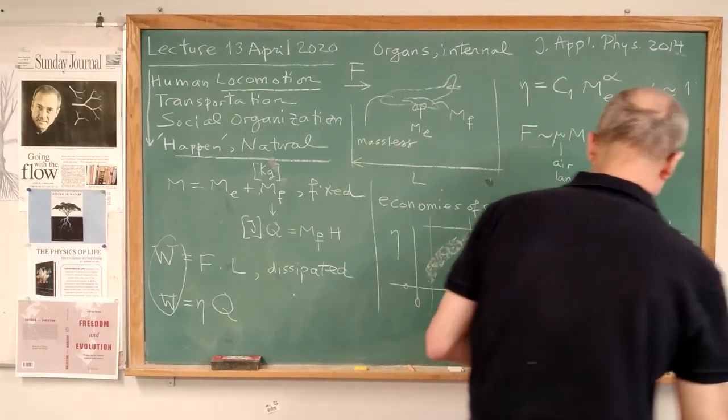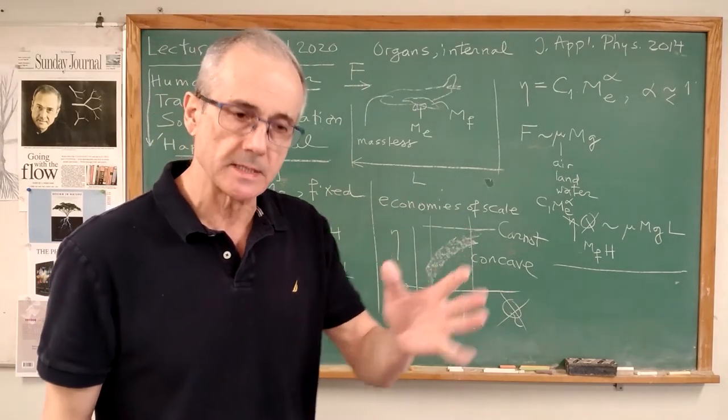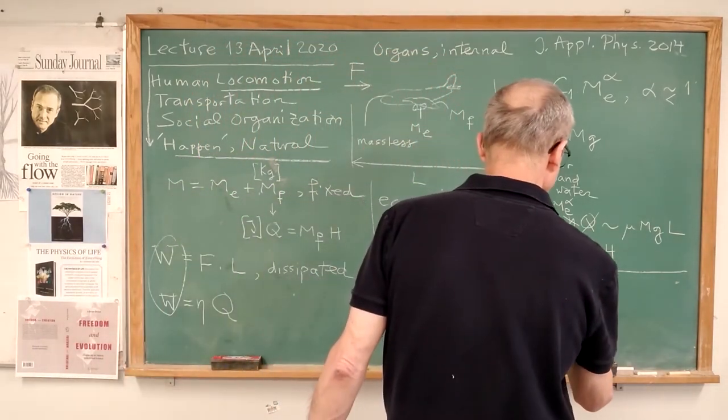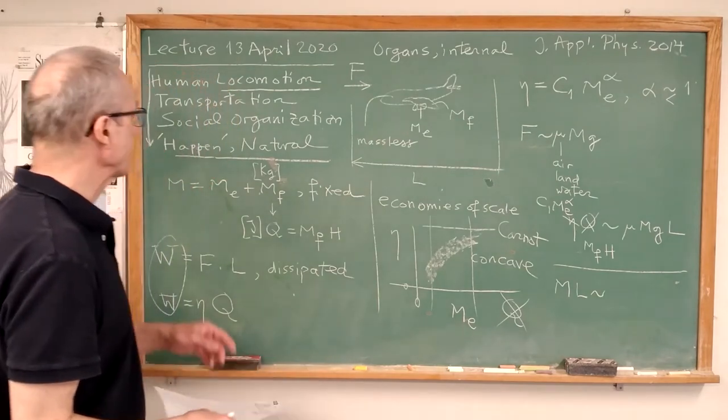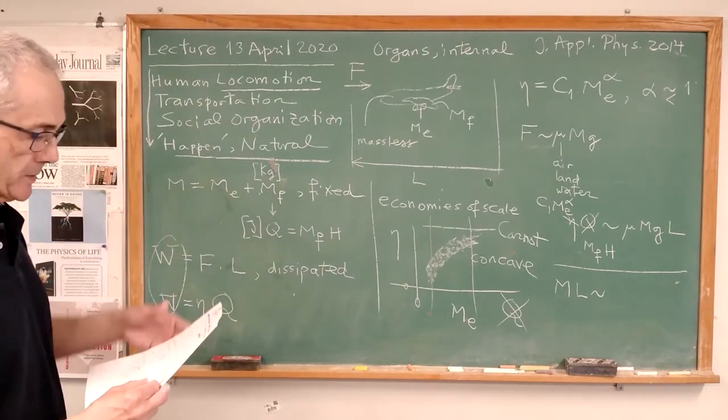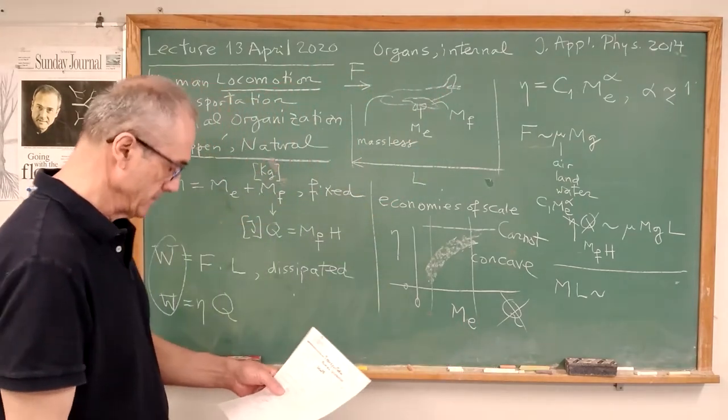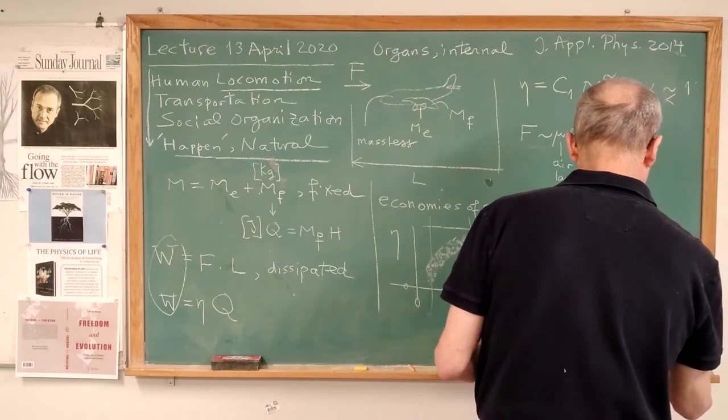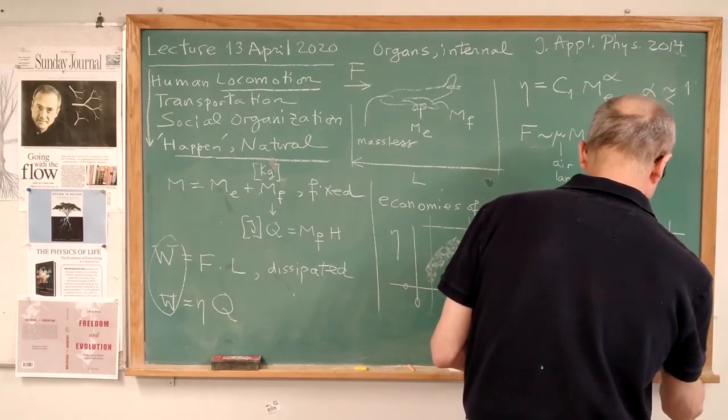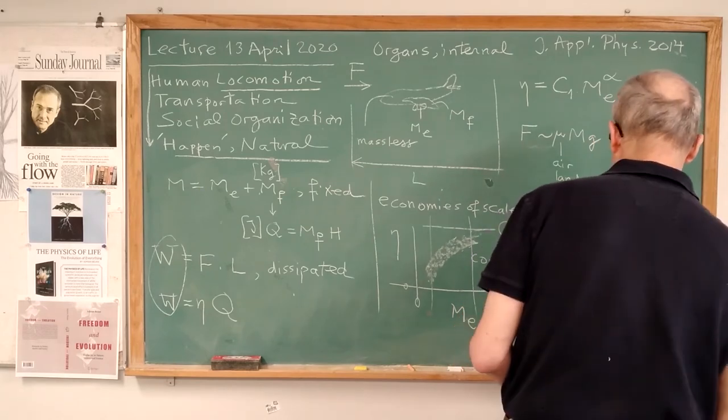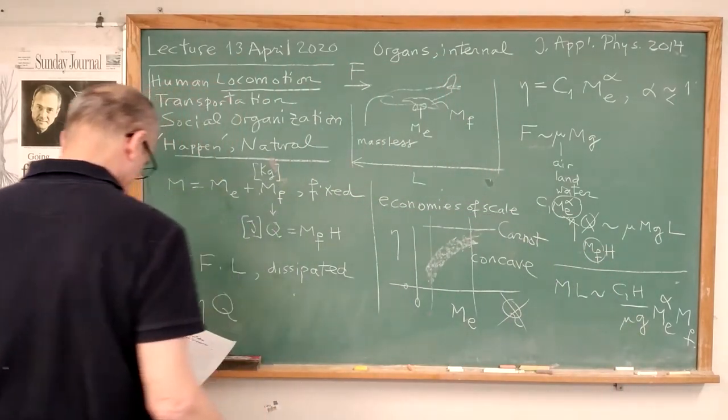F is the force by which the environment resists being pushed out of the way. That is a force proportional to the weight of the body. The weight is vertical, that's mg. And then a factor in front that plays the role of friction factor that accounts for the medium: air versus land versus water. And that means the W, which is, if you eliminate the W between these two formulas, you write eta Q is the same as FL, which means mu Mg L.